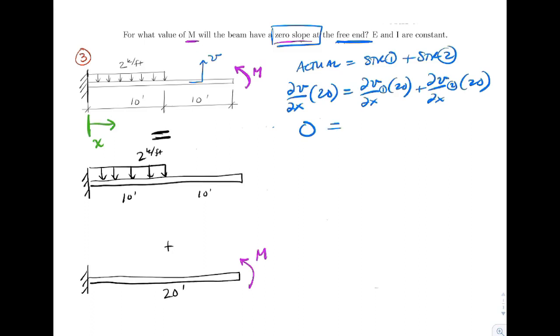And we know that this is going to equal zero. So what we need are the slopes. I need the value of slope in structure one and in structure two.